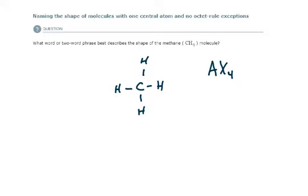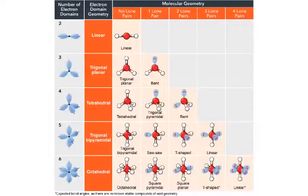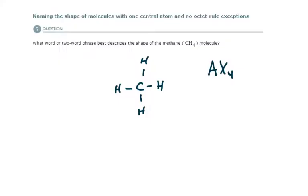There are no lone pairs around the central atom. And so if I want to check its electron domain geometry, I have one, two, three, four electron domains.